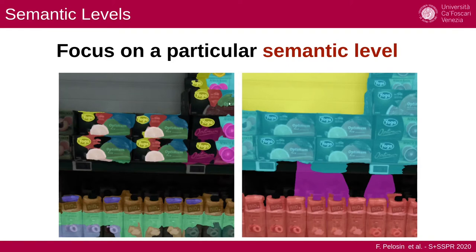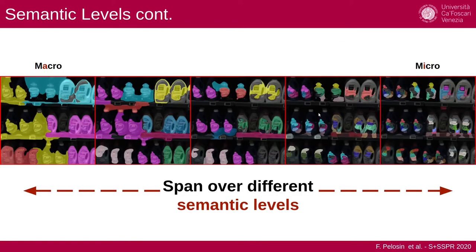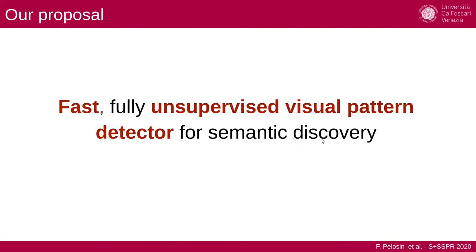Here you can see we have two different semantic levels. In particular, we want to span over these semantic levels. So we want to go from the macro area to the micro semantic level. And we do so through a fast and fully supervised visual pattern detector.